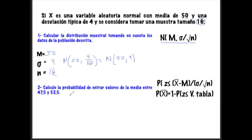Ya teniendo este primer inciso, nos vamos al segundo, donde dice: calcule la probabilidad de tener valores de la media entre 47.5 y 52.5. Nuevamente vuelve a ser un intervalo de medias, para ver si nuestra muestra nos va a dar valores dentro de esas dos medias y qué probabilidad tenemos de que pase esa condición.